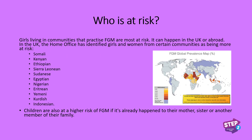Those most at risk are from communities where FGM is already practised. Sometimes somebody is brought into the UK to perform it as a ceremony; other times girls are taken out of the country to have it done elsewhere. The Home Office has identified girls and women from certain communities as being more at risk, but that does not mean every Somali girl or every girl from Egypt has undergone FGM — it means it is more prevalent in those countries. Children are also at much higher risk if it has already happened to their mother, sister or another family member. Some cultures make a big ceremony of it — the girl is considered finally a woman once it has happened to her.